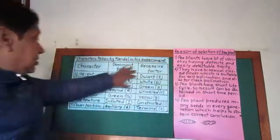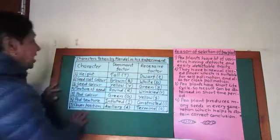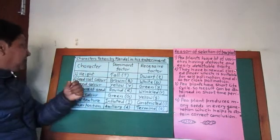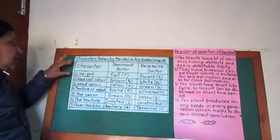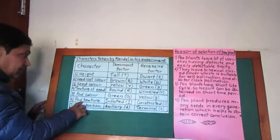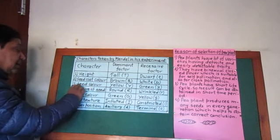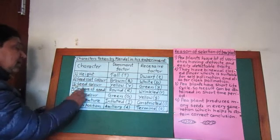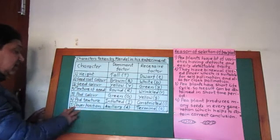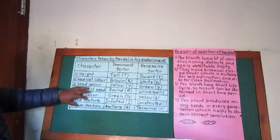Now I want to mention the different characters of the pea plant selected by Mendel. In his experiment, he took these characters: height, seed coat color, seed color, texture of the seed, pod color, pod texture, and flower position. These are the characters selected by Mendel.